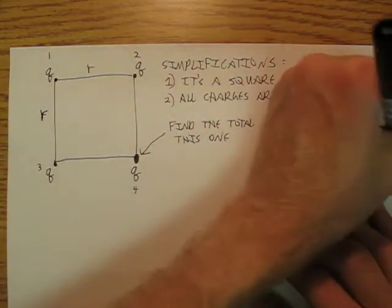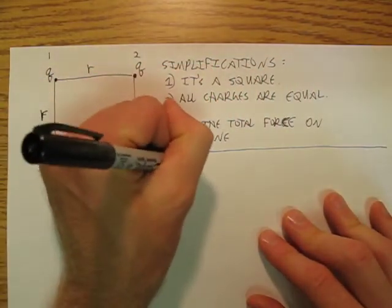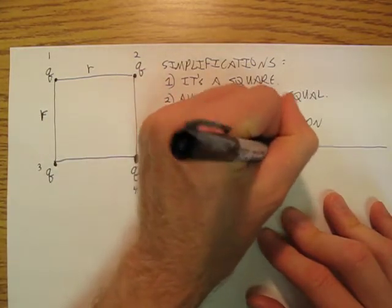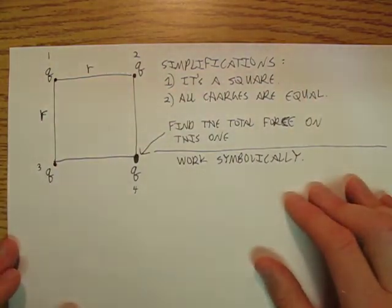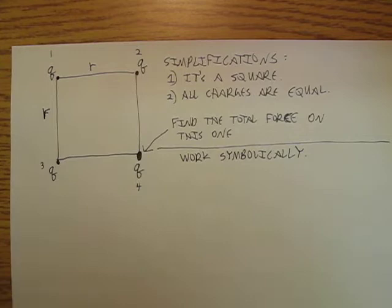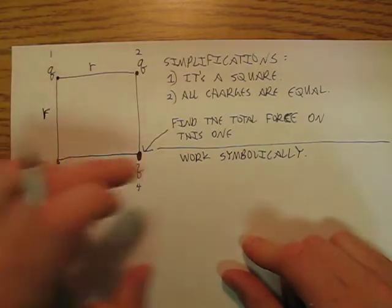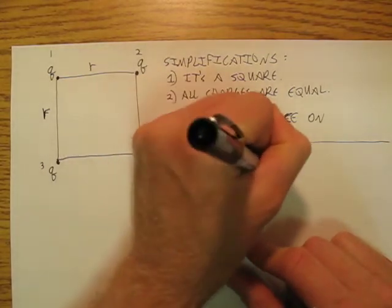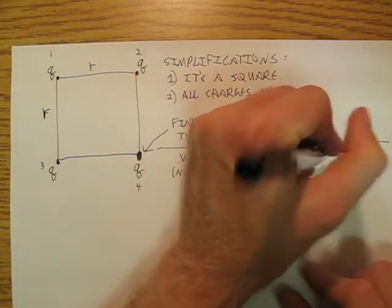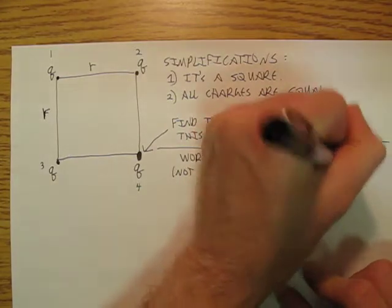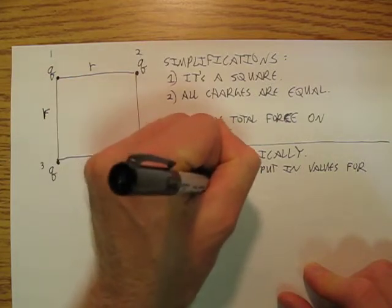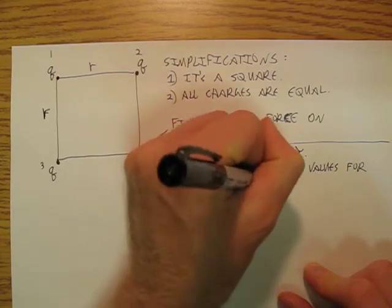Now the next thing that I'm going to do is I'm going to work symbolically. And you've seen me do this in some of the other lectures all the way through the year, but the point is that we're going to manipulate things without putting in the values. So we're not going to put in values for k, q, r, or F.